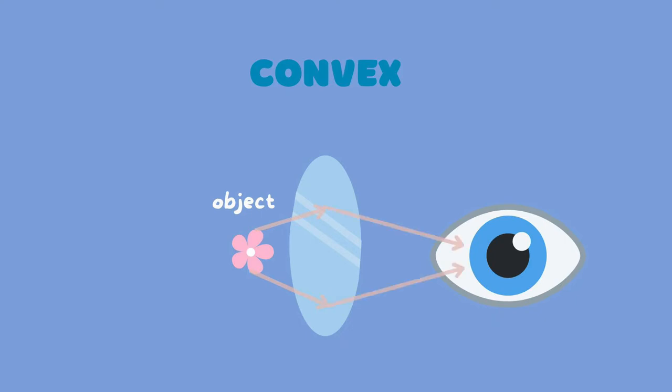In general, there are two types of lenses, convex and concave. Convex lenses are thicker in the center and thinner at the edges. They magnify objects, making them appear bigger.